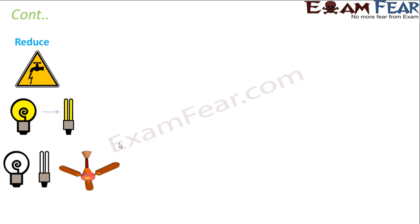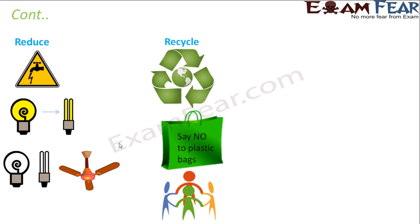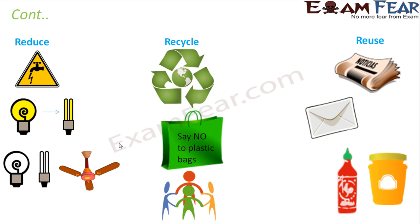Looking at examples: for reduce, we save water and replace high-power-consuming bulbs with CFLs which consume less power, and make sure no electric appliances, bulbs, tubes, or fans are unnecessarily switched on. For recycle, waste segregation is a must so the same product can be used over and over. For reuse, newspapers that have been read can be used to make envelopes, and empty jam bottles can store other things. We need to take care of these three R's for a good and healthy environment.